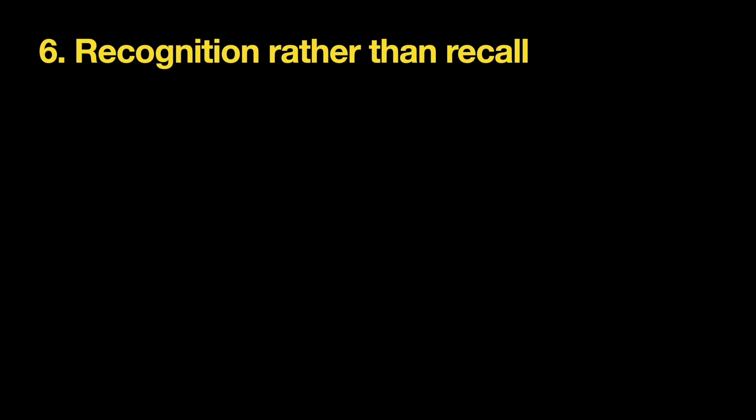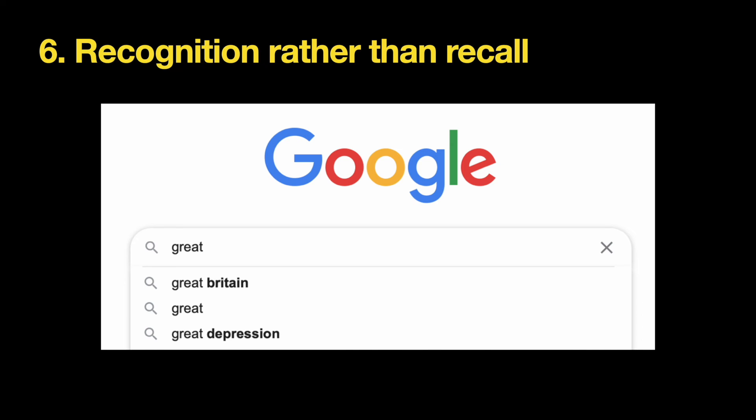Sixth, recognition rather than recall. Humans can recognize things much more easily than recalling them from scratch. Product designers should minimize the user's memory load by making objects, actions, and other options visible and clearly communicated — don't make users think. Provide all required suggestions at the moment when users need them. Contextual recommendations in Google search are an excellent example: as a user starts typing, Google suggests relevant queries, helping users find the right query in less time.